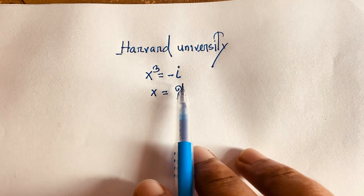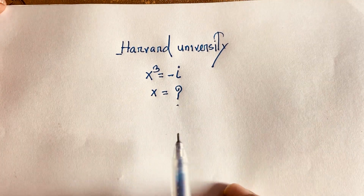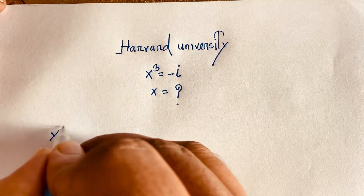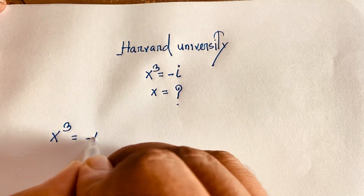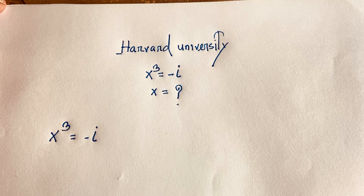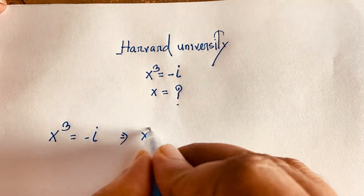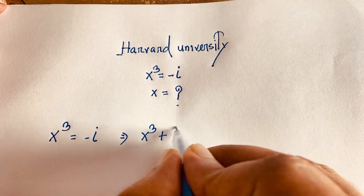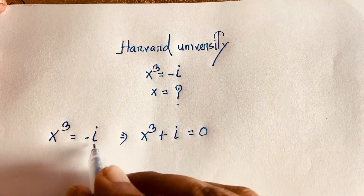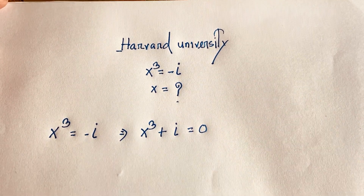It is minus i, it is a complex number. Our question is x to the power 3 is equal to minus i. Then it will look like: x to the power 3 plus i is equal to 0. I just move this negative i to the left side, so it becomes positive i.